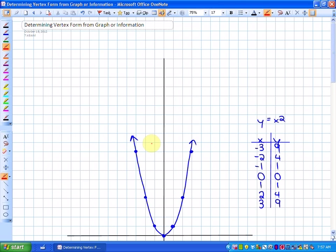All right, last lesson we looked at going from the vertex form of a parabola, which is the form y equals a times x minus p squared plus q, to the graph. What we're going to do today is doing the reverse, going from the graph or information into the vertex form.